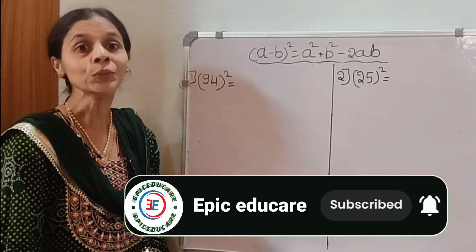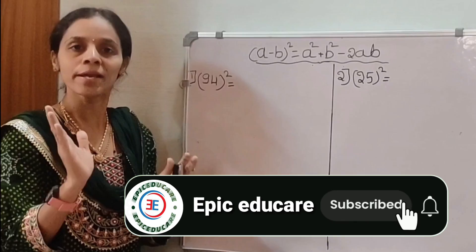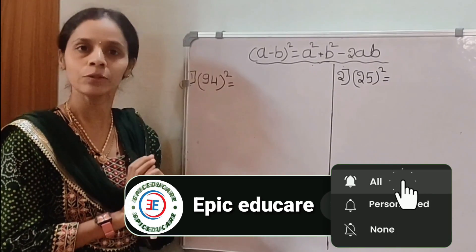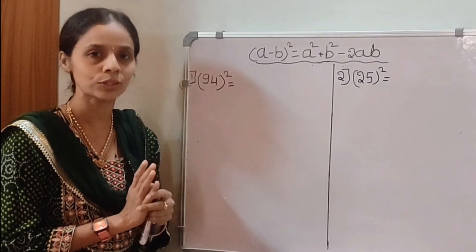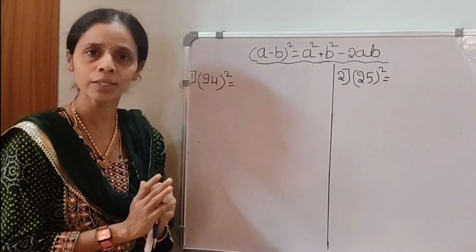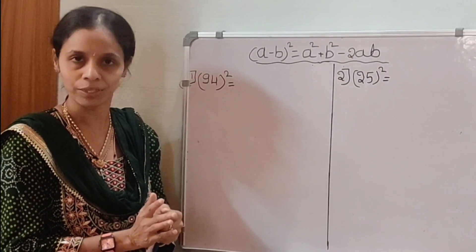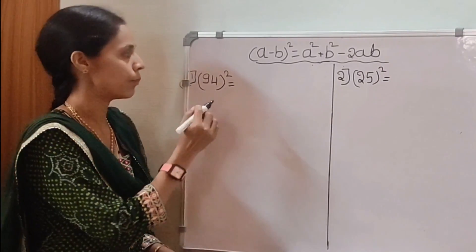Today we will discuss how to solve squares of any number using (a - b)². Already you know (a - b)² is equal to a² + b² - 2ab. Consider an example.